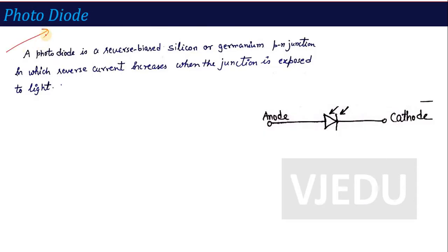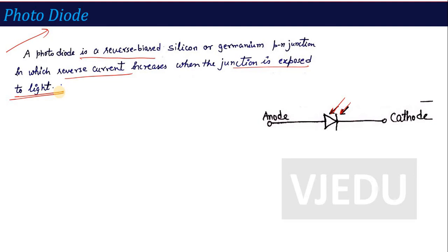Photodiode is a reverse-biased silicon or germanium PN junction in which reverse current increases when the junction is exposed to light. You can see the symbol here — incoming arrows are shown, indicating light falling on it. So when light is incident on the PN junction diode, its reverse current increases. Compared to LED, which emits light, the photodiode has light incident on it, and its reverse current increases.